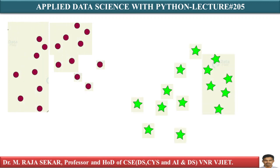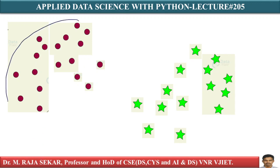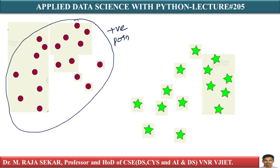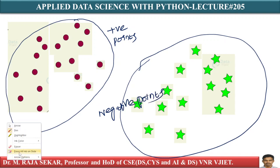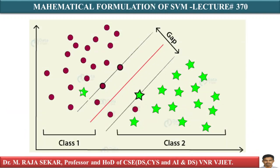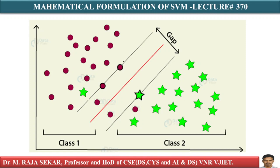Just try to recall in our lecture number 203 — we were assuming these points as positive points, and we were assuming this is the negative set of points. These vectors are known as support vectors.